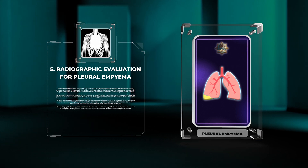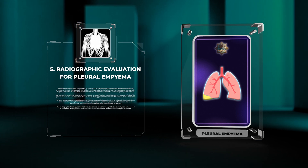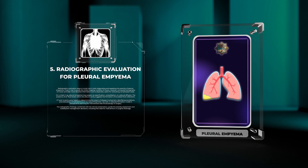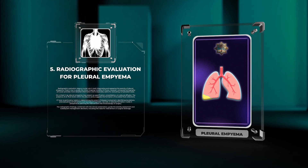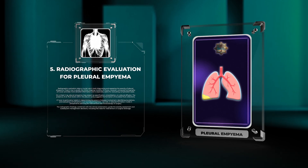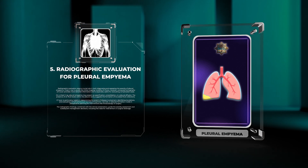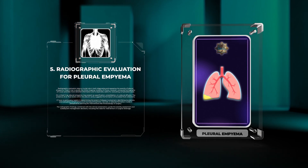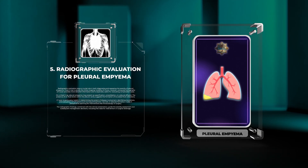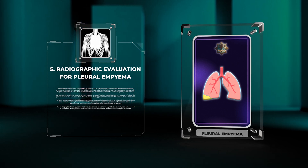On a chest X-ray, pleural empyema may present as opacification, consolidation, or a pleural effusion. The presence of air-fluid levels within the pleural cavity suggests the formation of loculated fluid collections.